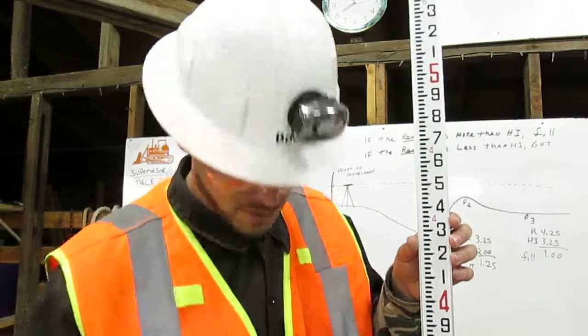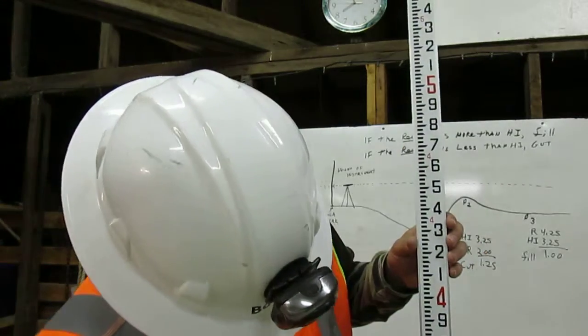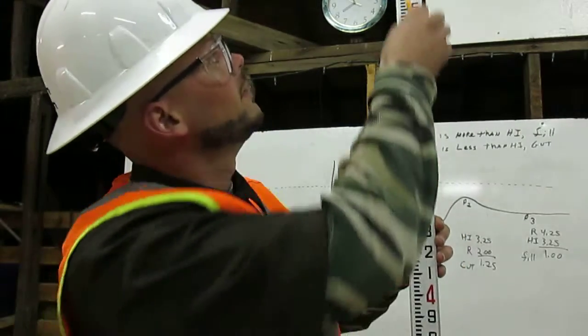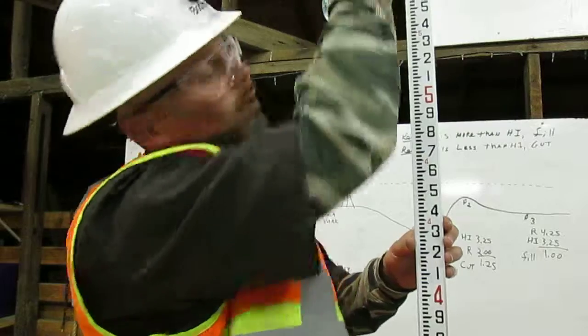The engineer's ruler is broken into feet. One feet, two feet, three feet, four feet, five feet, six feet, and so on.